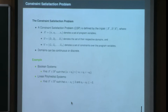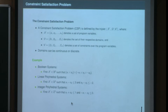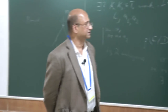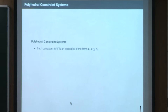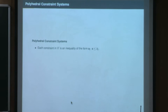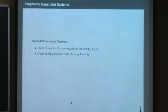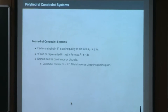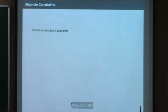For linear polyhedral systems, we find x in R^n such that the linear constraints are satisfied. For integer polyhedral systems, we find an integer tuple satisfying the linear constraints. We focus on a combination of linear polyhedral and integer polyhedral systems. Each constraint is an inequality of the form a_j x ≤ b_j, and the conjunction can be represented as Ax ≤ b or Ax ≥ b. If the domain is continuous it's called linear programming; if discrete, integer programming.